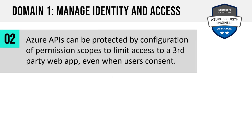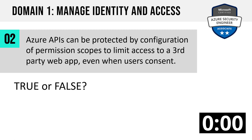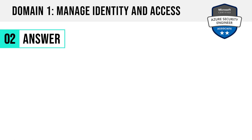Question 2. Azure APIs can be protected by a configuration of permission scopes to limit access to a third-party web app even when users consent. True or false? The answer is true. Admins can configure permission scopes ahead of any user consent.